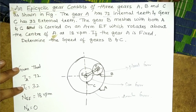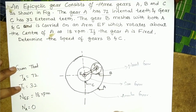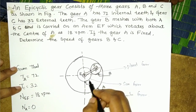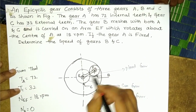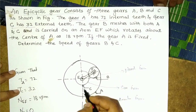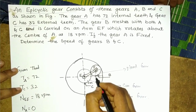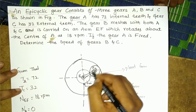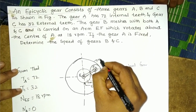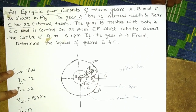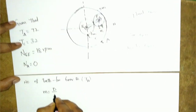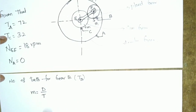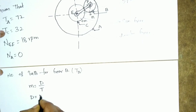When two gears mesh, they must have the same module. Gear B meshes with gear C and also with gear A, so all three share the same module M. Module M is defined as D divided by T, where D is the pitch circle diameter and T is the number of teeth. Therefore, pitch circle diameter D equals M times T.